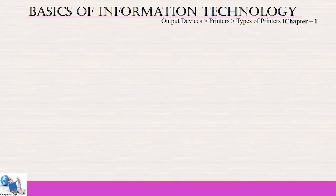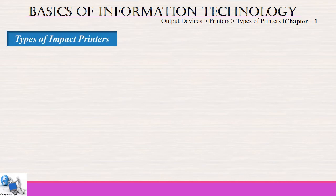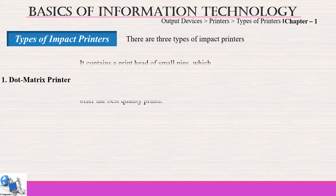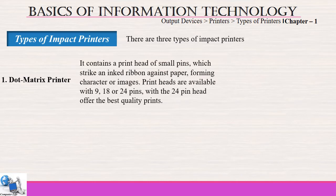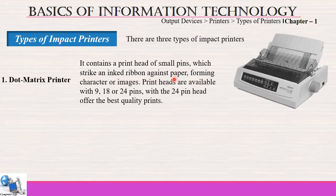Impact printers and non-impact printers have further types. There are three types of impact printers. The first one is dot matrix. In a dot matrix printer, a print head of small pins strikes an ink ribbon against paper to form characters or images. Print heads are available with 9, 18 or 24 pins, with the 24-pin head offering the best quality prints.